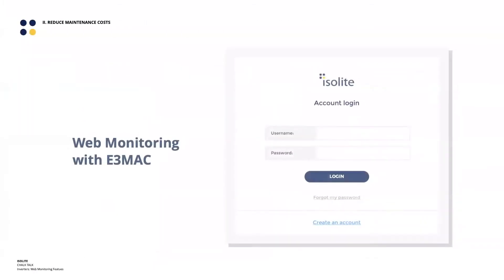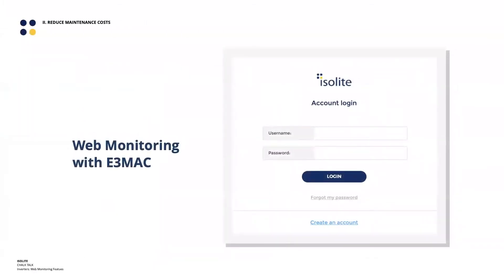The web monitoring features of the E3 MAC inverter do drive costs down to zero. Web monitoring makes it a self-documenting system in addition to being self-diagnostic — that extra step reduces the maintenance cost for the facilities team down to zero. It will do everything for you, and the nice thing is it just comes included with every E3 MAC inverter. Simply plug in an ethernet cable to the back of your E3 MAC and you can access our web monitoring portal linked from our web page.